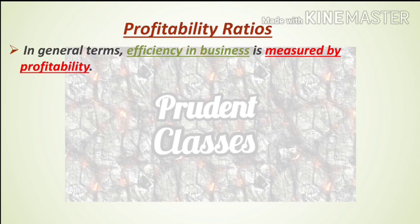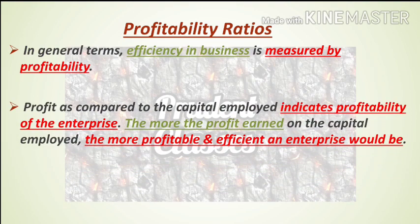Point number one says: in general terms, efficiency in business is measured by profitability. So guys, if we talk about measuring the efficiency of any business, you would look at its profit. If a business earns profit, that means the business is efficient. Now, profit as compared to the capital employed indicates profitability of the enterprise. The more the profit earned on the capital employed, the more profitable and efficient an enterprise would be.